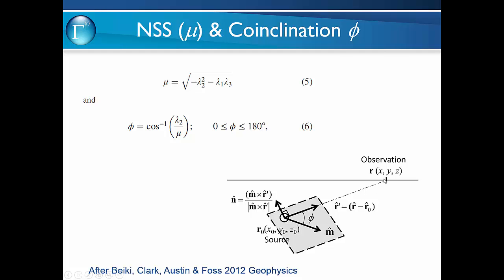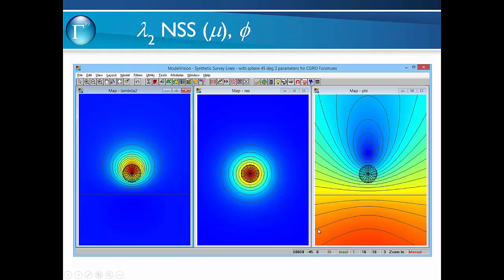The angle between the line from the observation point to the target and the magnetisation is the co-inclination angle. At some point this vector will be aligned with the measurement point, giving a null co-inclination angle — a zero value. That line between the low and the sphere gives us not only the direction of the magnetisation, but once we have the depth we can actually work out what the magnetisation direction is.